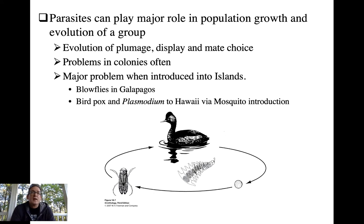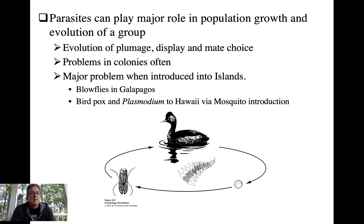Parasites can play a major role in population growth and also the evolution of those species. We've talked about how females pay attention to bright plumage and displays in mate choice to help pick individuals with good genes and that are parasite-free in regard to sexual selection. We also talked about how colonial nesting birds tend to have higher potential for spread of disease — explaining why it is a density-dependent factor. When these things are introduced to islands, they can have even more drastic impacts where birds have no natural adaptive abilities to fight off these diseases.